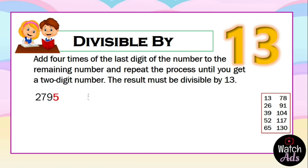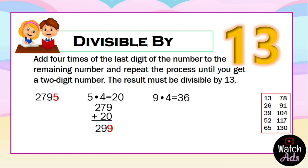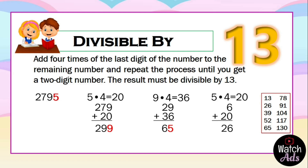For our last example, 2795: we take the last digit 5, multiply it by 4 to get 20, and add 20 to 279 to get 299. Now we take the last digit 9, multiply it by 4 to get 36, and add it to 29 to get 65. We can see on the table that 65 is a multiple of 13. We can still proceed: take 5, multiply by 4 to get 20, then add 6 to get 26. Checking the table, 26 is a multiple of 13, which confirms that 2795 is divisible by 13.